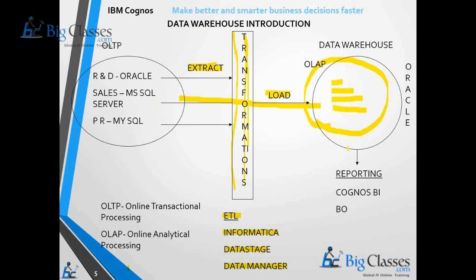Instead, if I prepare charts or display information in a tabular manner — for example, the top five revenue-generating employees in the Asia Pacific region, or the ten least-moving products in Europe — and present reports like that to users, then by seeing the charts, trends, pivots, and reports, they can understand what is happening in their business and take actions accordingly.